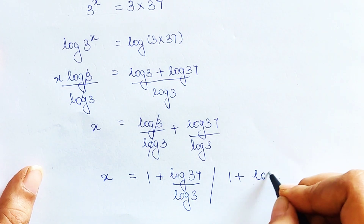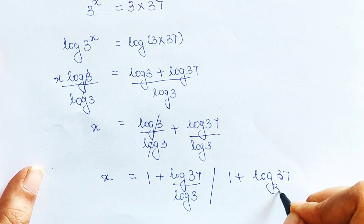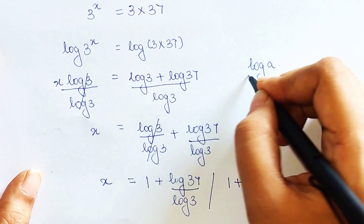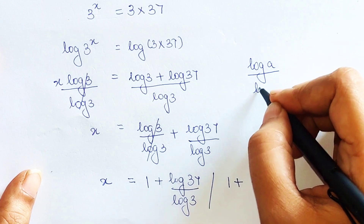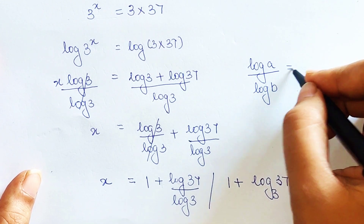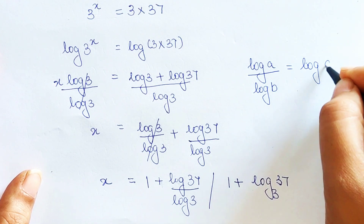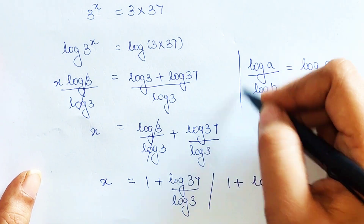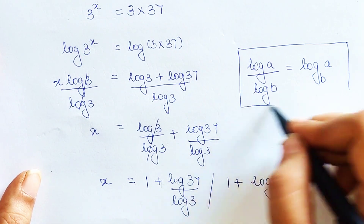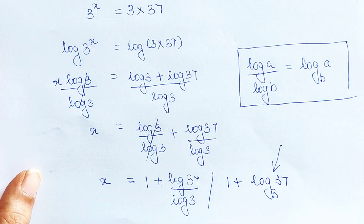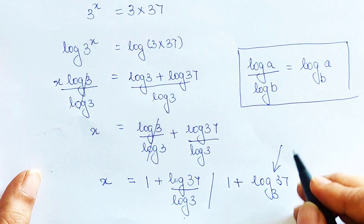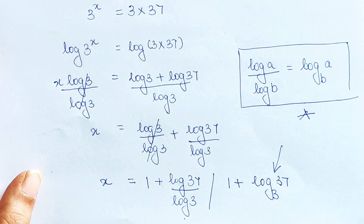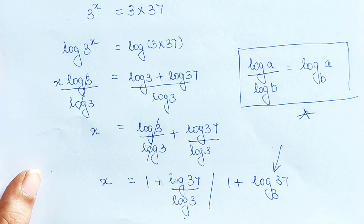You can write the answer this way, or you can also say it is 1 plus log of 37 to the base 3. This is because when you have log a upon log b, you can also write it as log of a to the base b. This is very important because sometimes in options they give you this format instead of the other. So that's it for today — I will see you in the next video.